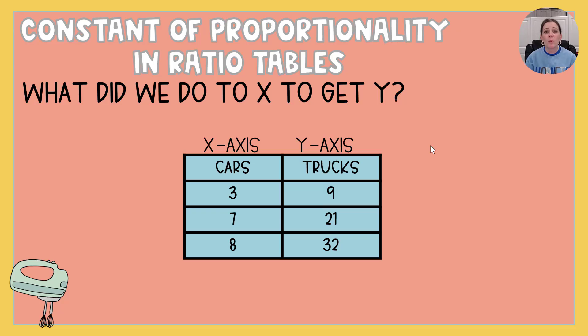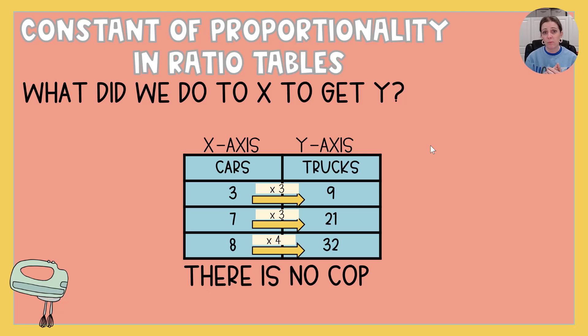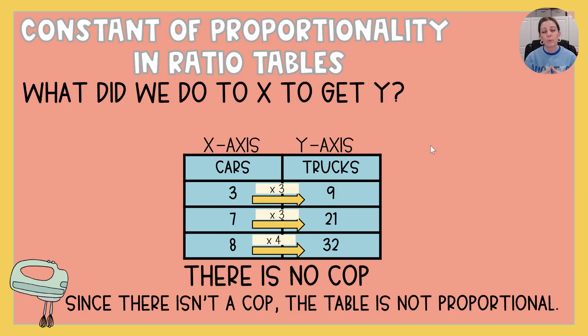Let's look at one more together here. We've got cars and trucks. What do we do to x to get y? Well, fairly simple to see. We know that three times three is nine. We know that seven times three is twenty-one. And we know that eight times four is thirty-two. Since we didn't do the same thing constantly, there is no constant of proportionality. And that means this table is not proportional. Okay? So not all of those ratios are equivalent.